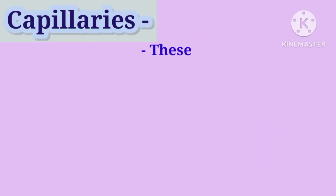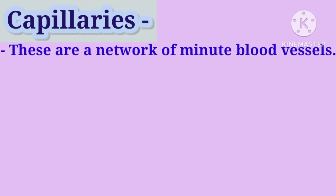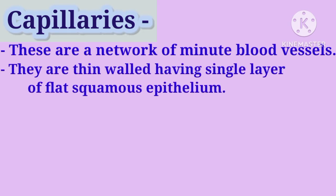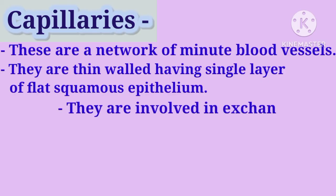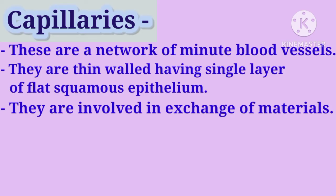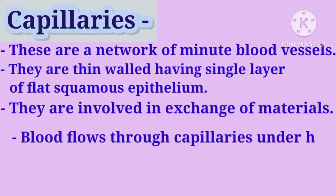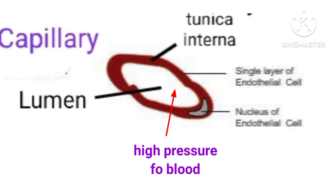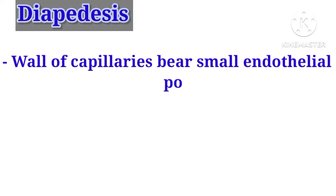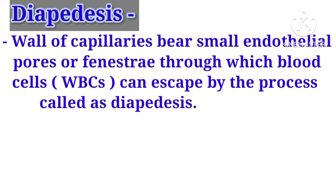Third blood vessel: capillaries. There is a network of minute blood vessels called capillaries — the smallest blood vessels of the body. They have thin walls made up of a single layer of flat squamous epithelium, which is stretchable. They facilitate the exchange of materials: providing cells with oxygen and food, and receiving carbon dioxide and waste material.